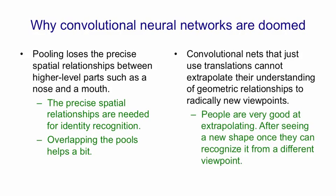Now, people are very good at extrapolating. After seeing a new shape once, they can recognise it from a very different viewpoint. Currently, the way we deal with that with convolutional neural networks is to train them on transformed data. This involves giving them huge training sets where we try to transform the data through different orientations and scales and lightings and all sorts of other things so that the network can cope with those variations. But that's a very clumsy way of dealing with the variations.